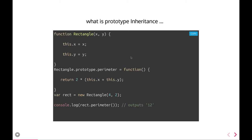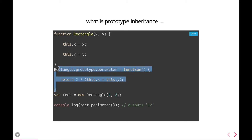In prototypal inheritance, we create functions and keep adding prototype functions — like rectangle.prototype. One of the methods I added is 'parameter'. Now whenever you create an object of this function, each and every object will have this prototype function available. Prototype functions are not copied for each object; they exist in a shared instance so every object can access those prototype methods.